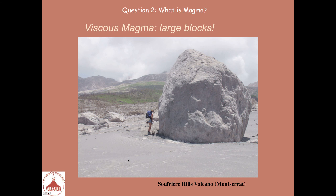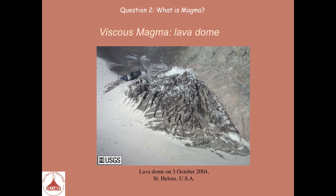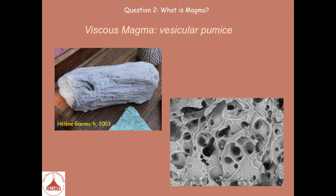But with more viscous magma, the eruptions are explosive and can produce large blocks, like this one, that fall on the ground during the explosion. They can also produce lava domes, such as this one — very viscous grey flows. The last slide shows the vesicular aspect of the texture when it comes from a viscous magma rich in gas.